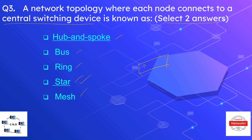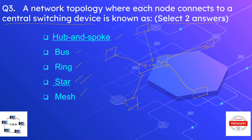This topology looks like this: we have a hub or a switch in the center, and the nodes are connected in the fashion of a star. This topology is known as a star or hub and spoke.